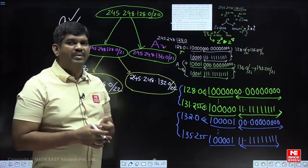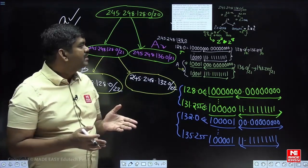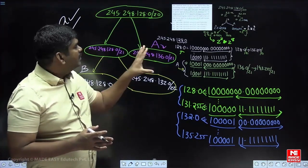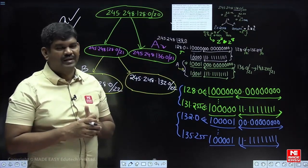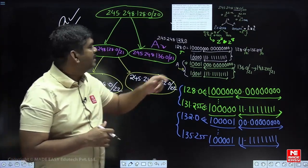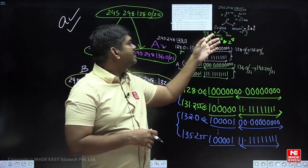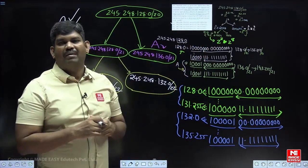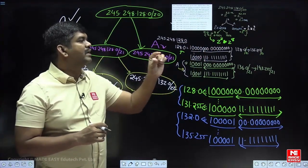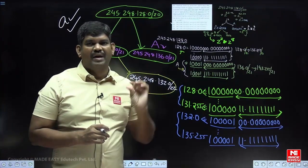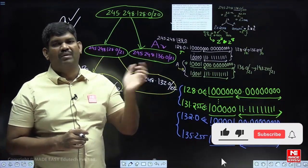The basic idea of this problem is understanding how an ISP divides an original block and allocates addresses to different organizations. Sometimes the question may not give a power-of-two count, in which case you round up to the nearest power of two.